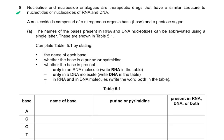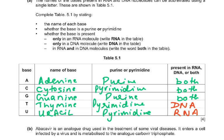Question 5. Nucleotide and nucleoside analogs are therapeutic drugs that have a similar structure to nucleotides or nucleosides of RNA and DNA. A nucleoside is composed of a nitrogenous organic base and a pentose sugar. The name of the bases present in RNA and DNA nucleotides can be abbreviated using a single letter, as shown in Table 5.1. Complete Table 5.1 by stating the name of each base, whether the base is a purine or pyrimidine, and whether the base is present only in RNA, only in DNA, or in both. Completing the table was not very difficult.